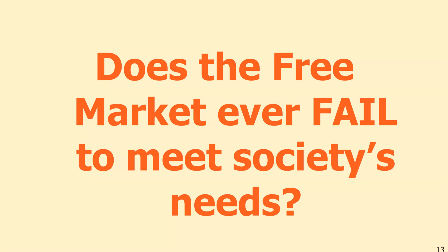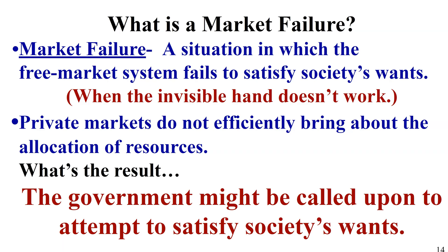Does the free market ever fail to meet society's needs? Of course it does. There are situations we call market failure — when the invisible hand isn't working like we thought it would, and there is a failure in meeting the needs and desires of society. Private markets don't efficiently bring about the allocation of resources. It may be beneficial from a private benefit or private cost point of view, but isn't beneficial to society in terms of social benefits and social costs. So government has to step in to balance the scales, especially when it comes to safety, security, and other issues.